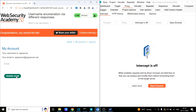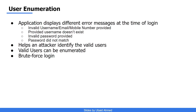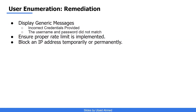How can we remediate this? Your job is not only to perform security testing and find vulnerabilities, but also to provide recommendations. The first thing is to ensure the application displays generic messages — no matter if the username is valid, invalid, blocked, inactive, or not registered, always display something like 'incorrect credentials provided'. Another recommendation is to ensure proper rate limiting is implemented so that if there are multiple requests in a short period, the server stops responding to them. The server can also block a particular IP temporarily or permanently.